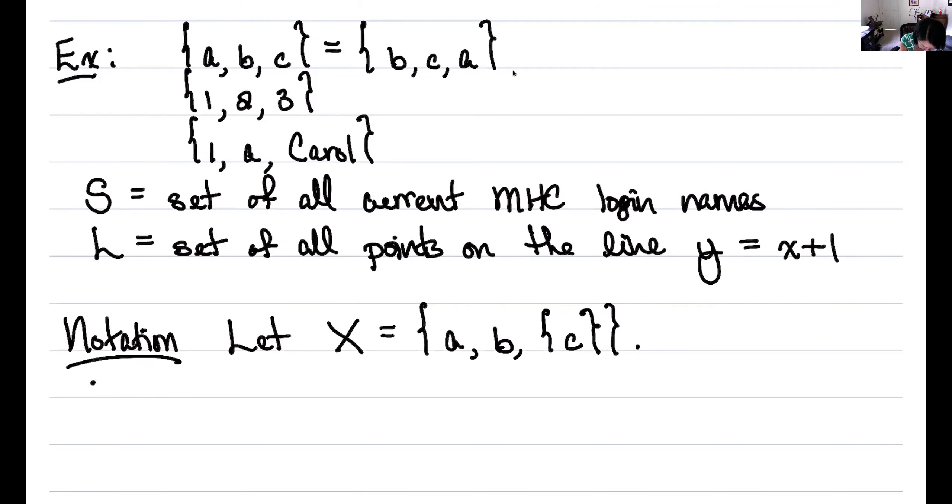So I might write, if I want to say that a is an element of X in shorthand notation, what I'll write is 'a ∈ X', so this is how it's read, 'a is an element of X'. If something is not, so like c, c is not an element of X. The set containing c is an element of X, but c is not itself an element of X.